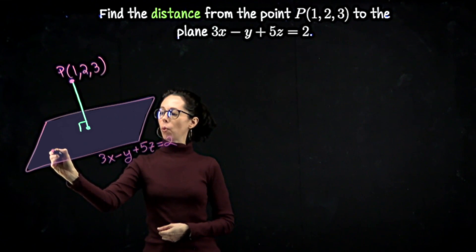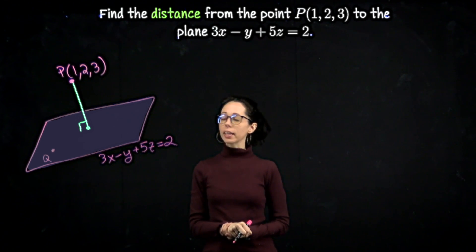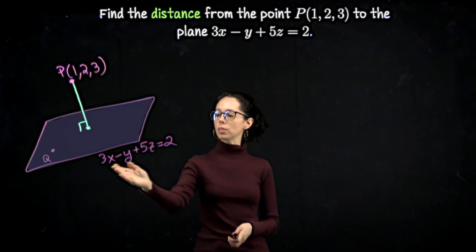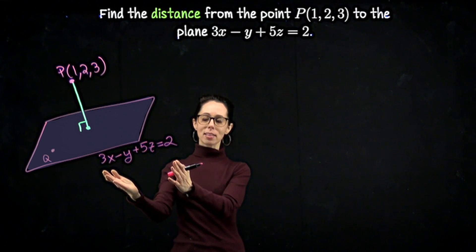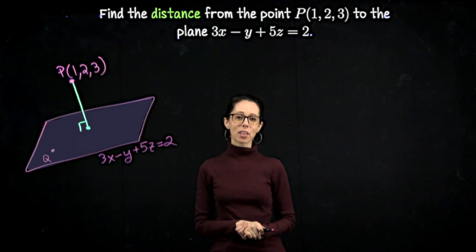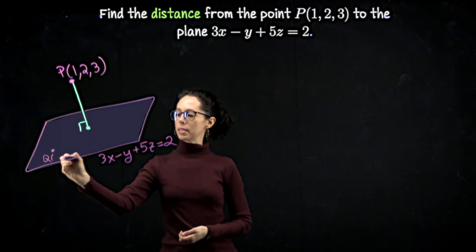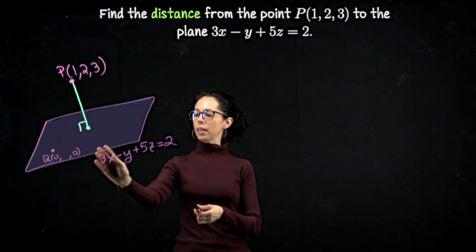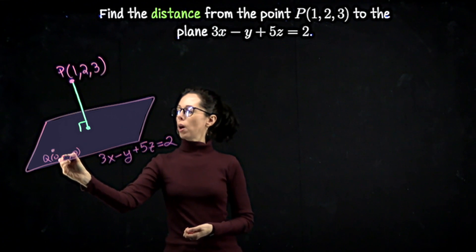So I'm going to say that this is some point which we'll call Q. And I can give Q coordinates. There are infinitely many ways to do that. You just need to find a triple of values, x, y, and z, that makes this plane equation true. So any pairing of x, y, and z coordinates that when you plug it into 3x - y + 5z, you get 2, is a point that lives on the plane. I think the easiest thing to do is zero out a couple coordinates. So let me say, let x be 0, z be 0. I would be looking at -y = 2, so y is -2.